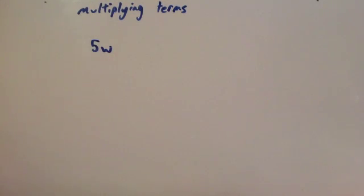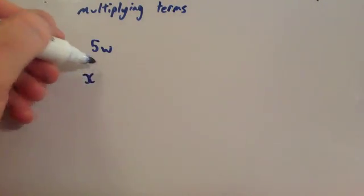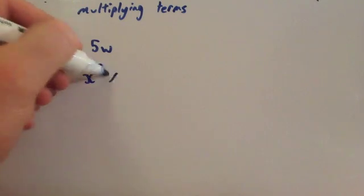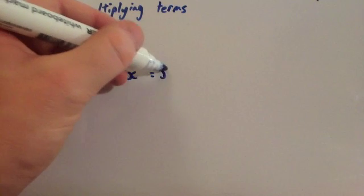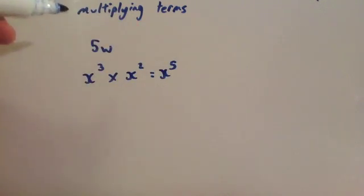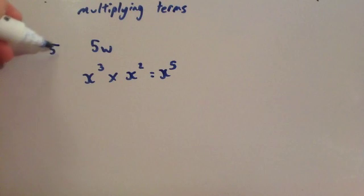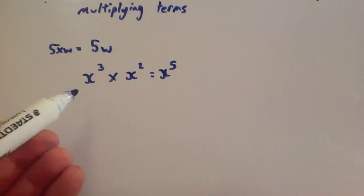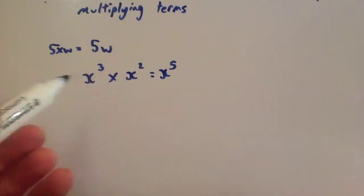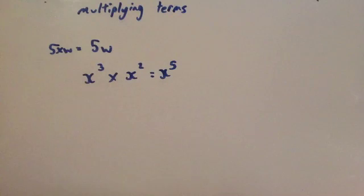The other video I'd recommend is the video on indices. That explains, for instance, if you had x to the power of 3 and you times it by x to the power of 2, you add the powers and get x to the power of 5. So watch the video on algebraic notation and the video on multiplying indices.